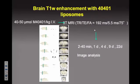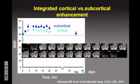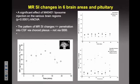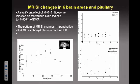We did brain imaging experiments in mice, looking at kinetics of signal increase in various brain areas using fast imaging with a relatively small dose of contrast agent. We observed that subcortical areas were enhanced more than other brain areas, with the exception of the pituitary gland, which is supplied directly by blood. The most important conclusion from analysis of these images was a hypothesis about how these mimetics penetrate the brain — not through direct blood-brain barrier penetration, but instead by exchanging with cerebrospinal fluid through the choroid plexus.